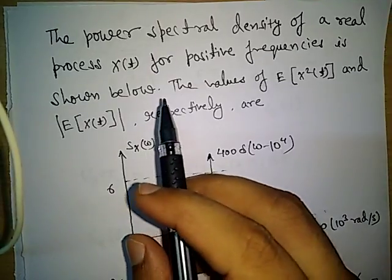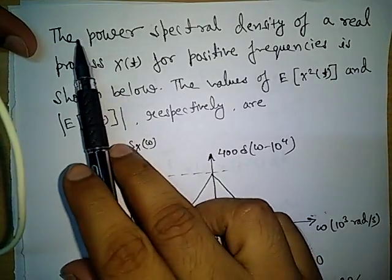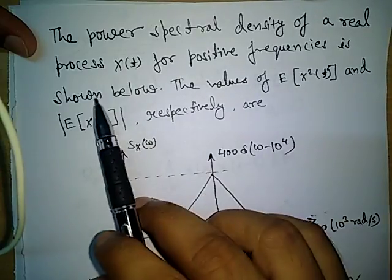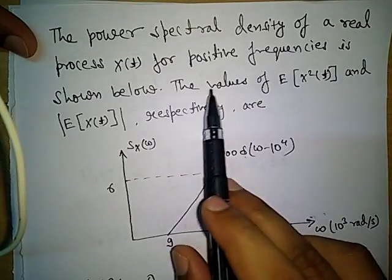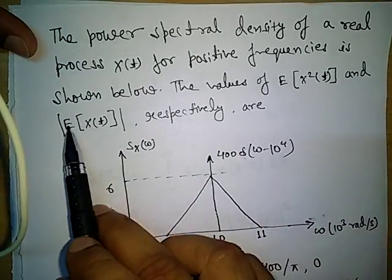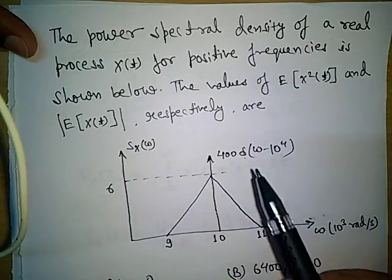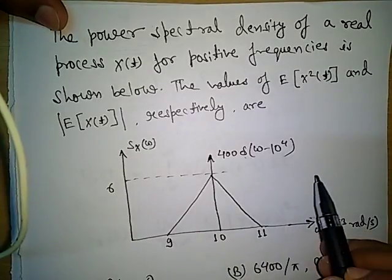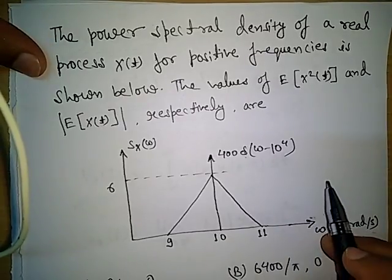We will learn about power spectral density and its properties. I have taken a question from the Gate exam previous year. The power spectral density of a real process x(t) for positive frequency is shown, and we have to determine the values of the expected value of x²(t) and the expected value of x(t). To deal with this question we must know the power spectral density, so we will learn it first along with its properties, and then try to solve the problem.